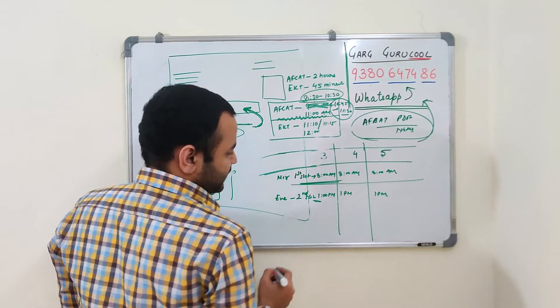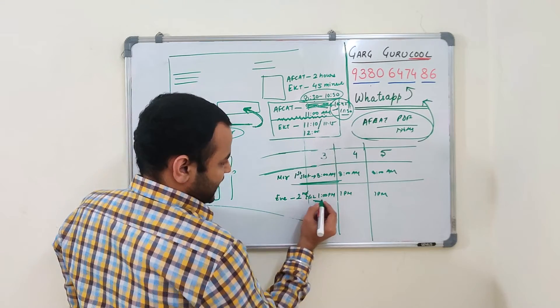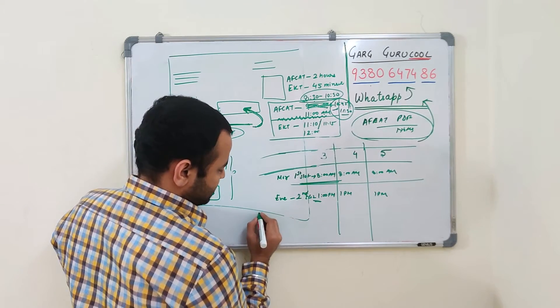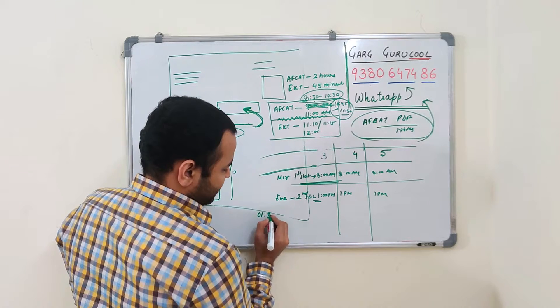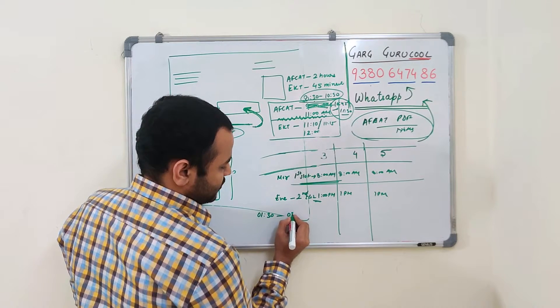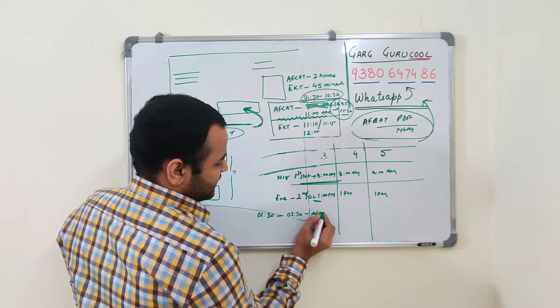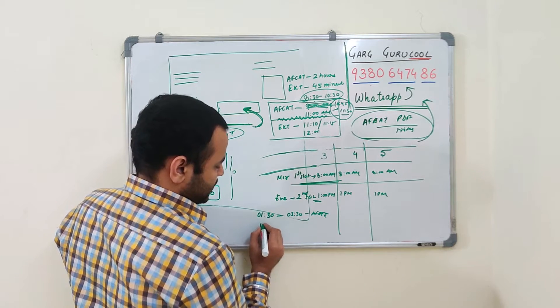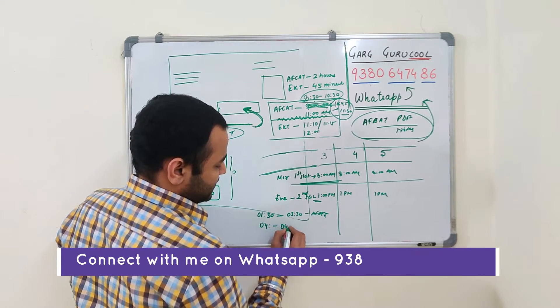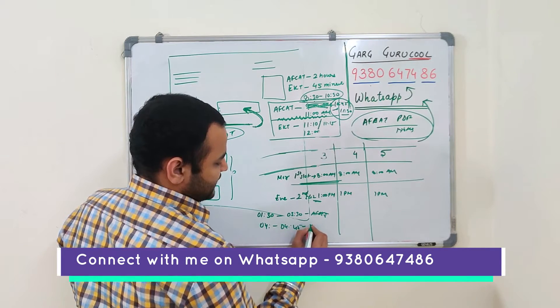Now, in the evening shift or afternoon shift, similarly AFCAT will be for 2 hours. The reporting time is 1. So we are assuming your AFCAT starts at 1.30. It will be over at 3.30. This is AFCAT. And from 4 to 4.45, your EKT will happen.